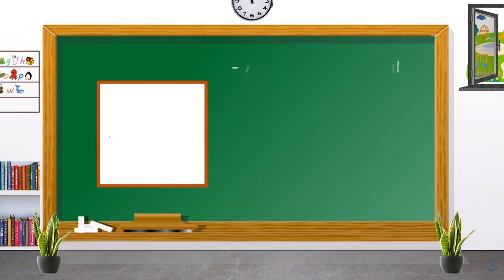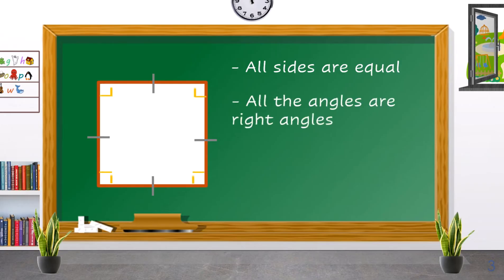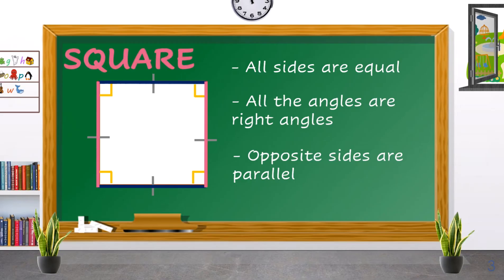The first type: all sides are equal, it has four right angles, and the opposite sides are parallel. This is what we call the square.